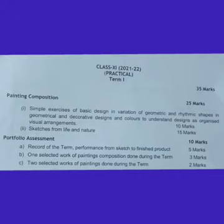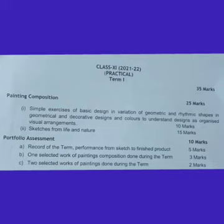Now we move to portfolio assessment, which is 10 marks. First, part A is a record of terms and performance from sketch or finished work — it is 5 marks, so you have to show your record of work. Part B is one selective work of painting composition done during the term, which is 3 marks, and two selective works of painting done during the term.